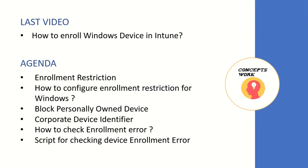In the last video we discussed the process of getting a Windows device enrolled in Intune. The agenda of this video will be: how enrollment restriction works, how to configure enrollment restriction for Windows on endpoint.microsoft.com, how to block personally owned devices, what is the purpose of corporate device identifier, and how to check enrollment errors for a specific user or all users on endpoint.microsoft.com.